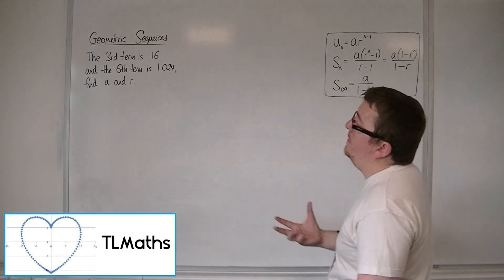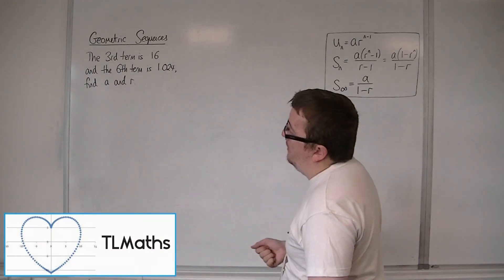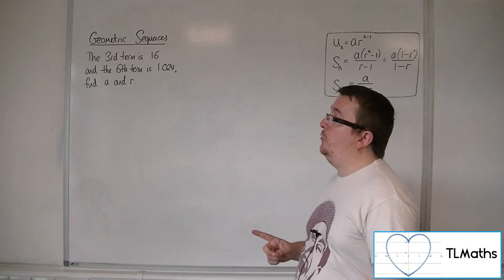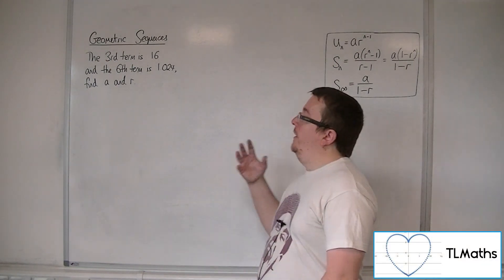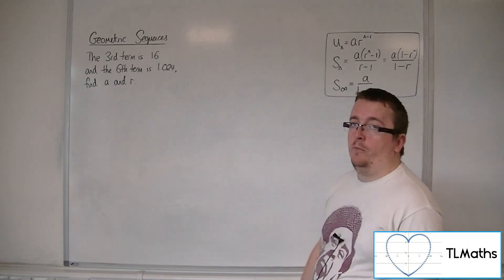So let's say we have a geometric sequence, the third term is 16, the sixth term is 1.024, and I want to find the first term and a common ratio.